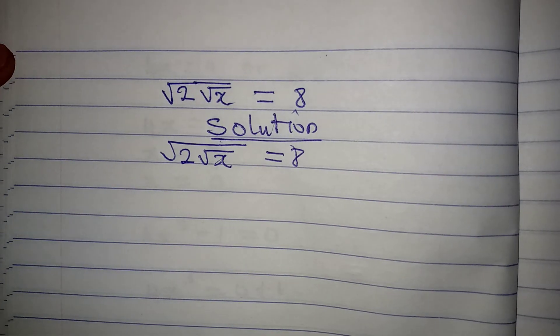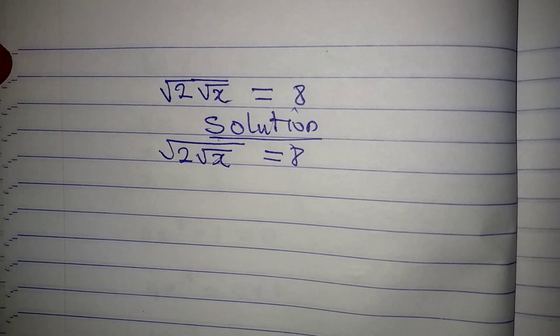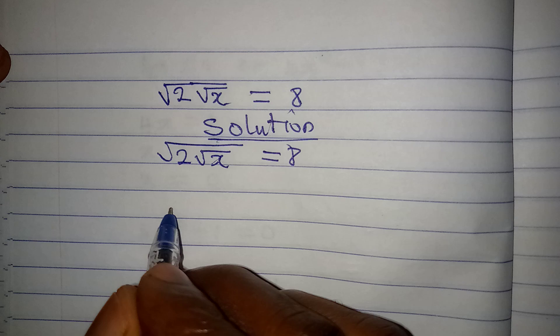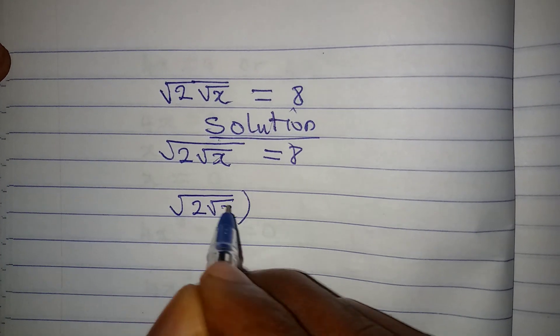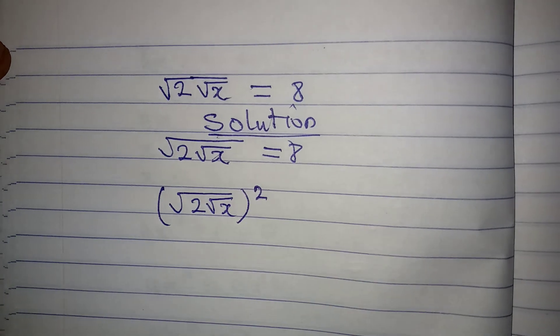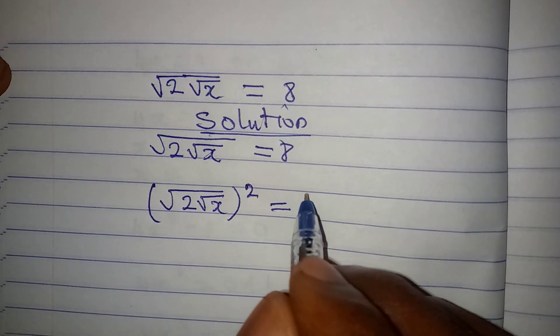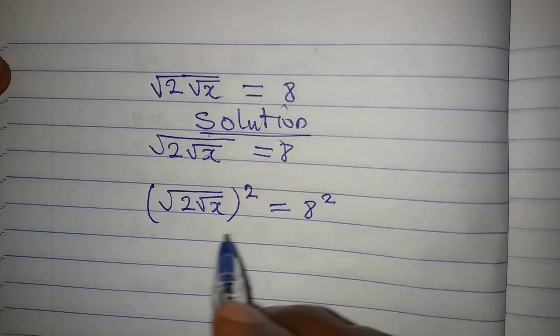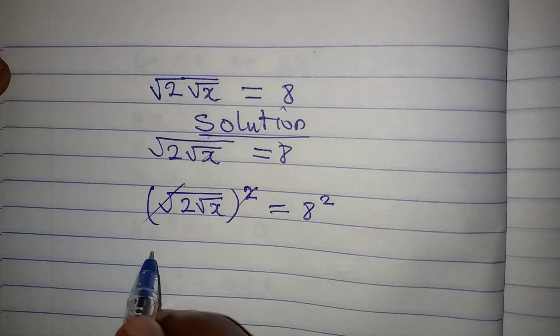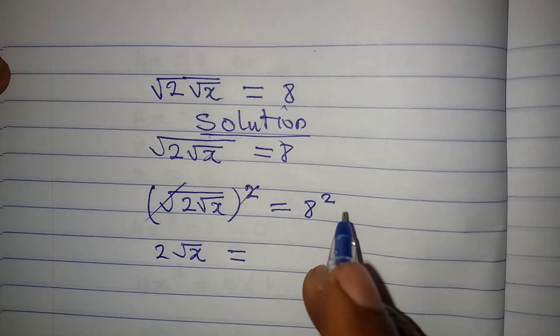Here's what I want us to do. We have square root of 2 square root of x. Square the left hand side and equally square the right hand side, so we're going to have 8 squared. Now 2 square root of x is giving us 8 squared.